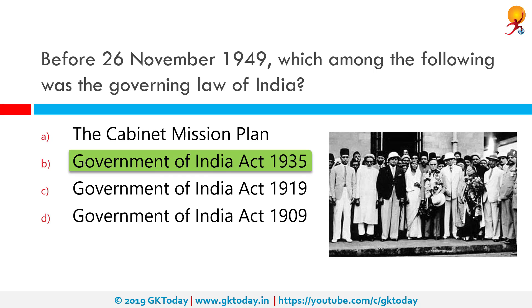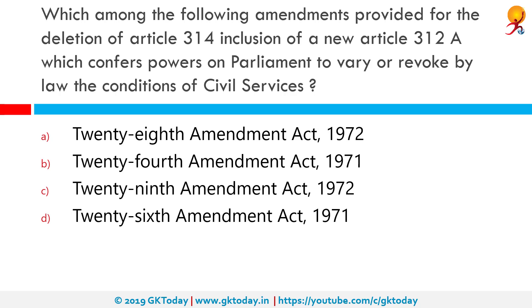Before 26 November 1949, which among the following was the governing law of India? The correct answer is the Government of India Act 1935. This was not a very popular act — Jawaharlal Nehru called it 'a machine with strong brakes but no engines' and also called it 'a charter of slavery,' while Jinnah called it 'thoroughly rotten, fundamentally bad, and totally unacceptable.'